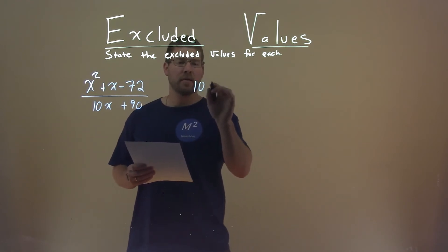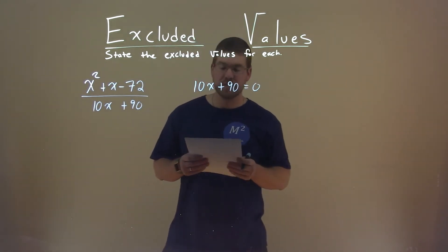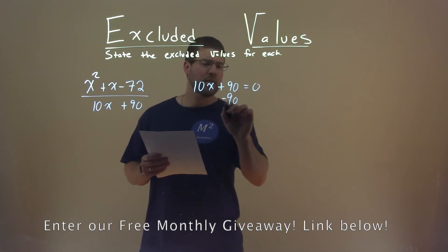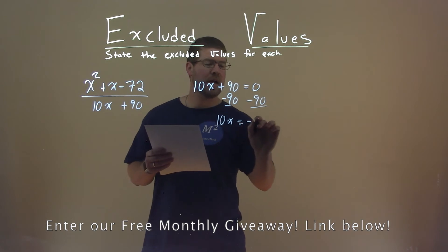So I take my denominator, 10x plus 90, and I'm going to set it equal to zero. Now we're going to find the x value that makes this happen. We subtract the 90 to both sides, and we have 10x equals negative 90.